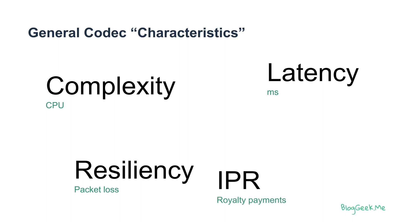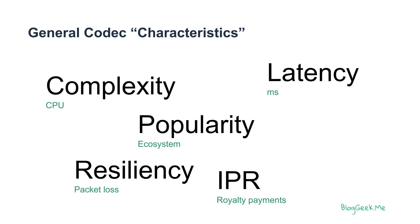Then there's IPR — royalty payments. A lot of codecs today require paying for the patents used in them. If you want to use a codec you might need to pay someone for it. And there's popularity — how popular a codec is, what the ecosystem around it looks like, and who is using it. The more popular the codec, the easier it is going to be for you to use it and find developers who know how to work with it.